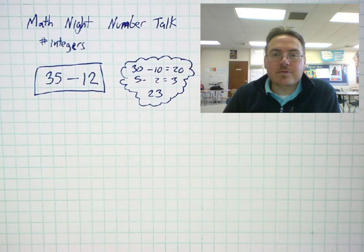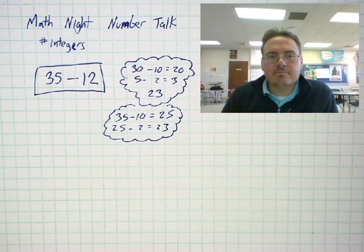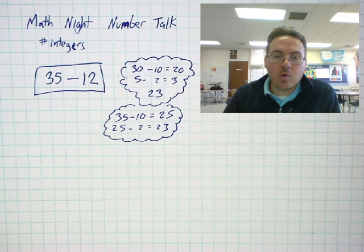Maybe you subtracted the tens places and subtracted the ones places, and then put them together. Maybe you subtracted 10 first, and then subtracted the two afterwards, and ended up with 23 that way.